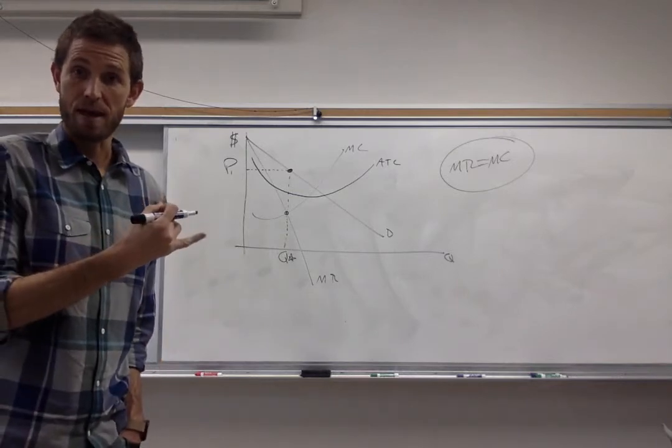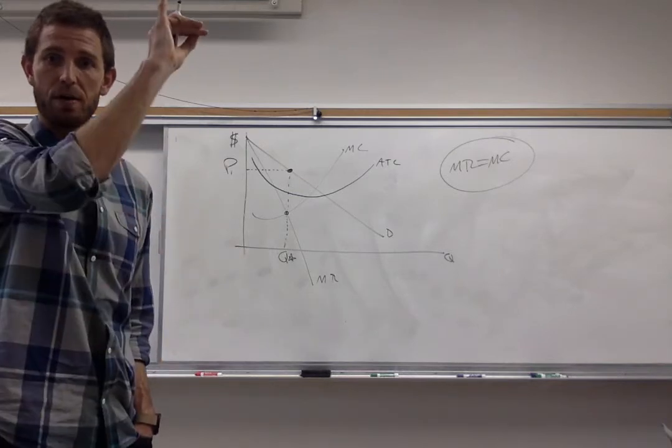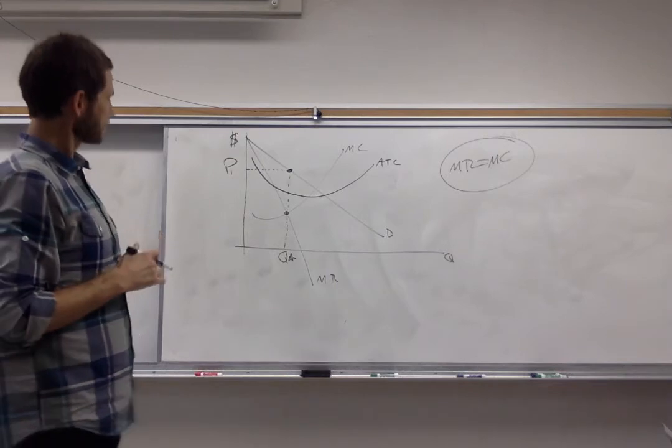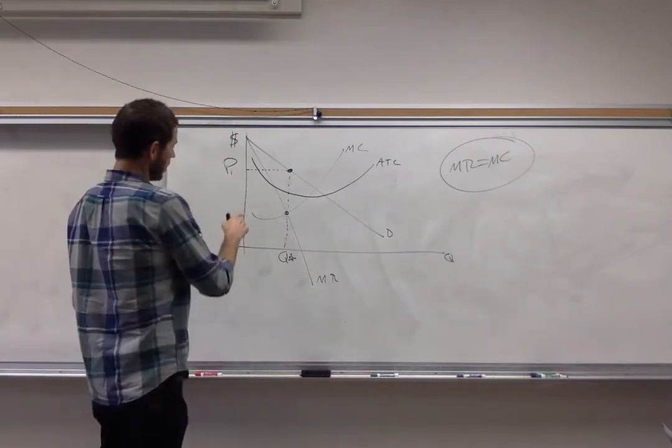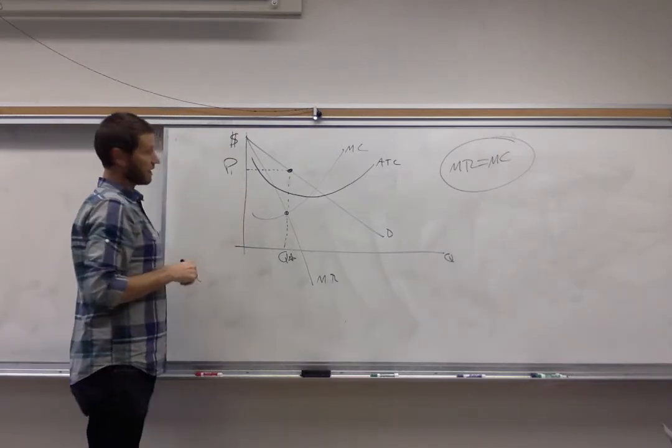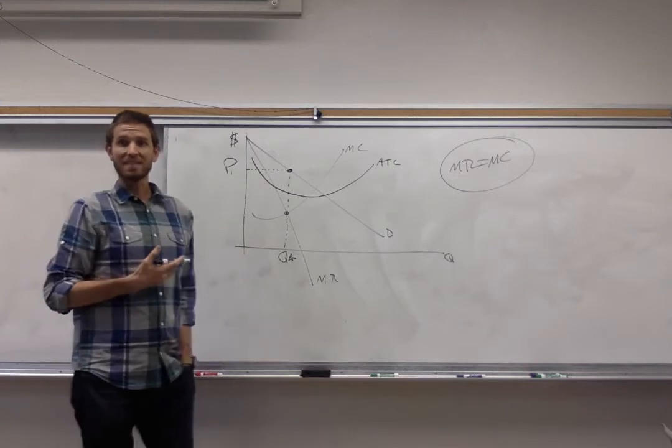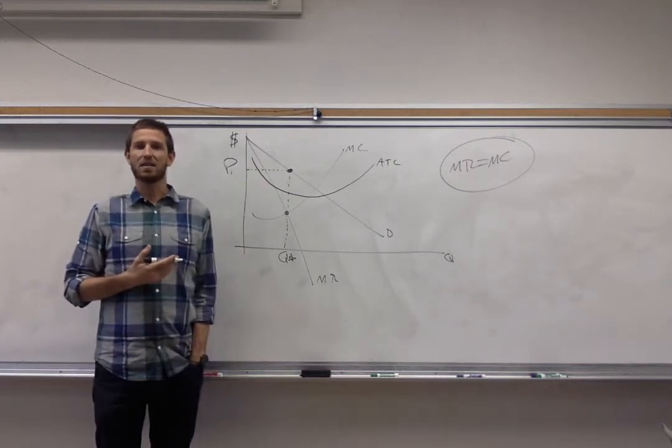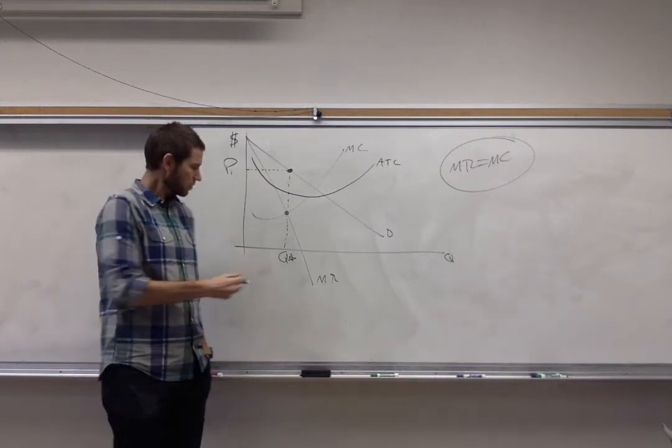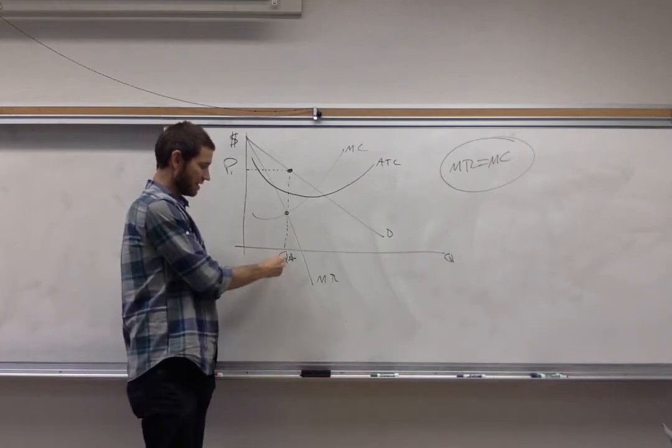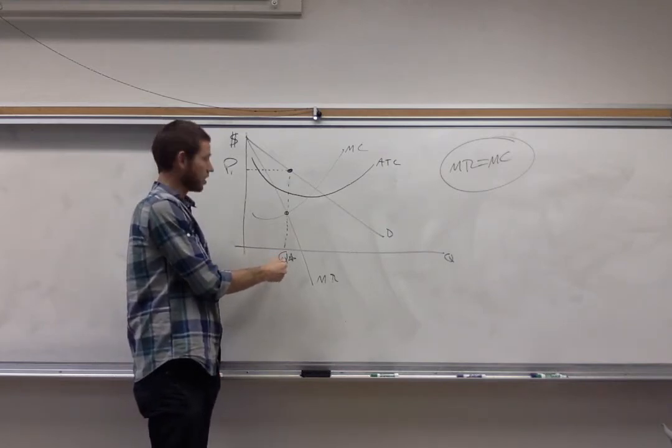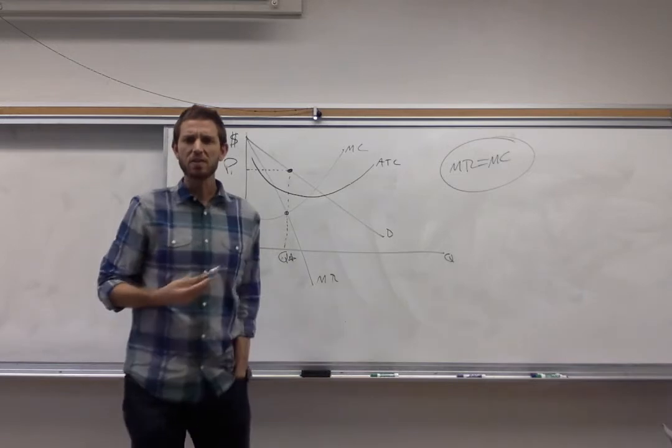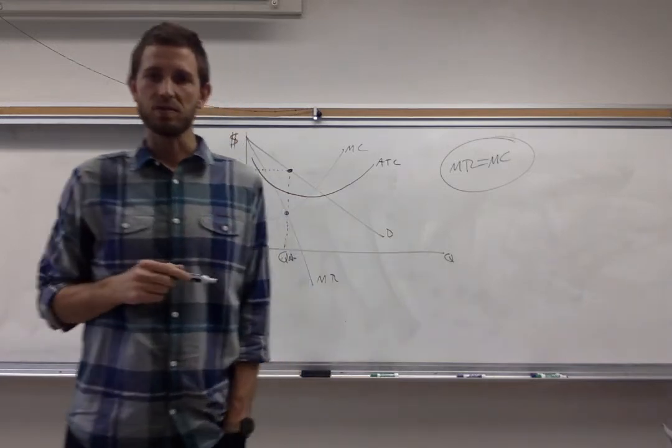Alright so first find the profit maximizing quantity and then go straight up to the demand curve. So we've got now our price and quantity. That's all we need on the revenue side of things. The last step in our process is to find the cost for this firm. So we know this is the amount of the good that they're going to produce, Q star. The question would be how much is it going to cost this firm to make that many units.